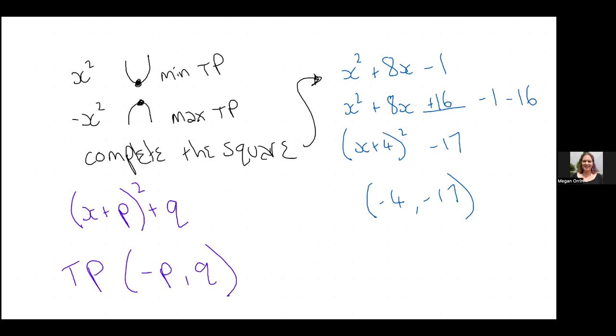Another way that you can get the turning point, we did last year. Do we remember this? Negative B over 2A. That got us our axis of symmetry. Remember we were looking for that last year? So if I did negative B over 2A, what do I have? What's negative B? And what's 2A?